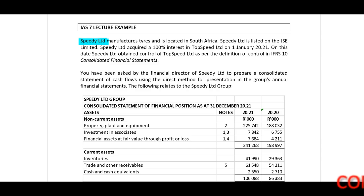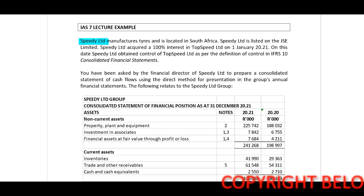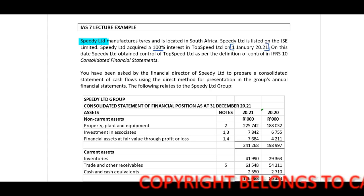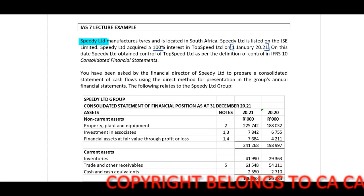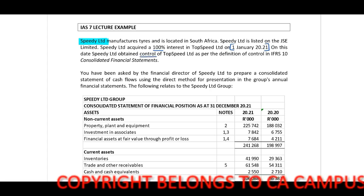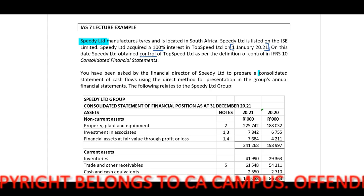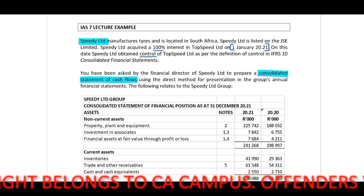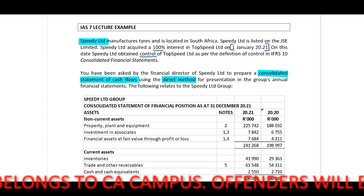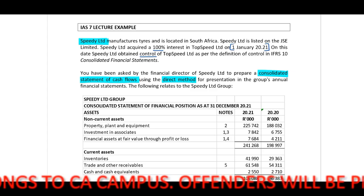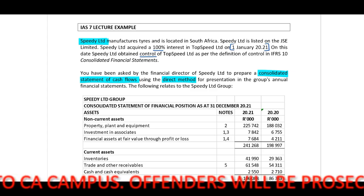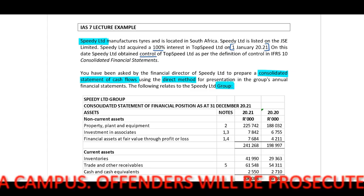Welcome to our lecture example. Speedy Limited manufactures ties and is located in South Africa. Speedy Limited is listed on the JSE. Speedy Limited acquired a 100% interest in Top Speed Limited on 1 January 2021. On this date, Speedy Limited obtained control of Top Speed Limited as per the definition of control. You have been asked by the financial director of Speedy Limited to prepare a consolidated statement of cash flows using the direct method for presentation in the group's annual financial statements.